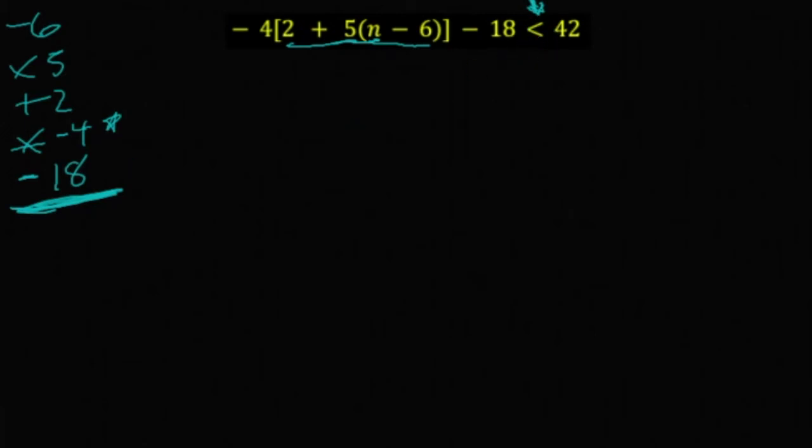All right, undoing these steps, we will undo minus 18 with a plus 18. We'll undo times negative 4 with a divide by negative 4. We'll undo plus 2 with a minus 2. We will undo times 5 with a divide by 5. And lastly, we will undo minus 6 with a plus 6.